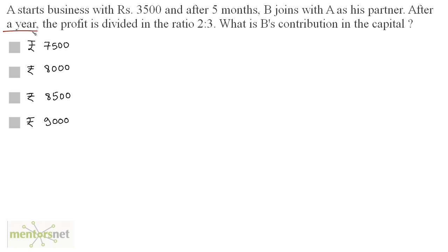Well, the business is there for a year. So A's contribution because he started the business is 12 months and B's contribution is 12 minus 5 because B joins after 5 months. So B's contribution or B's time period is 12 minus 5 that is 7 months.